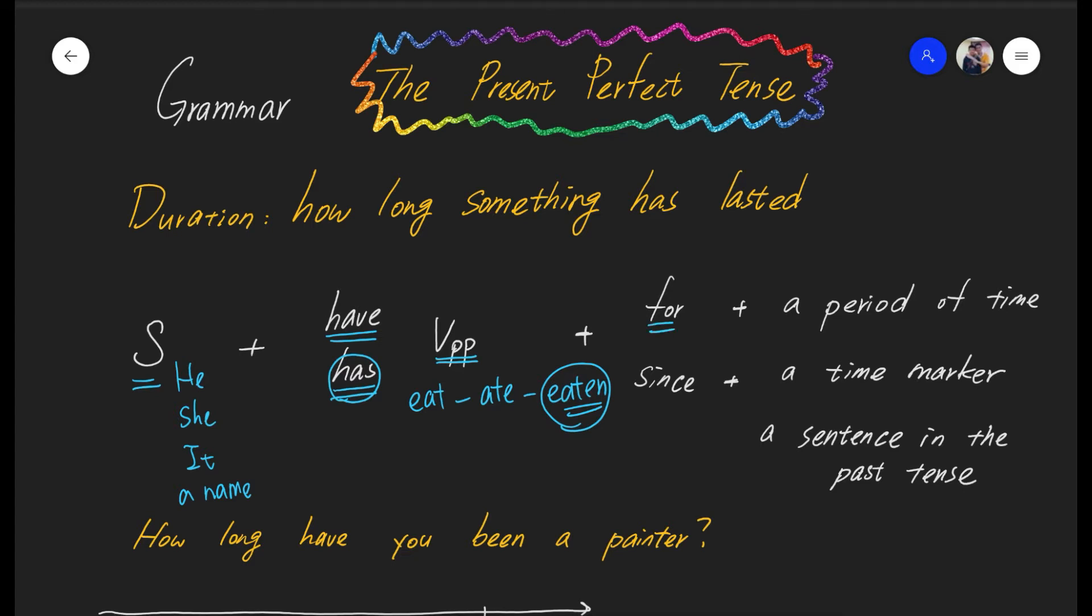And for, with the period of time, like three days, like six years, a number and a time quantifier like years, months, days, something like that. Since with a time marker, like yesterday, like 1985, or even a sentence in the past tense, like when I was young, when she was little, something like that.